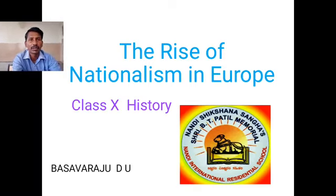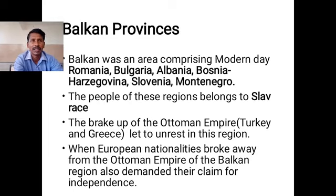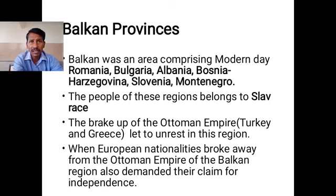In the previous session we were discussing about the tension which arose in the Balkan provinces. The Balkan province was mainly the area comprised of modern Romania, Bulgaria, Albania, Bosnia, Herzegovina, Slovenia, Montenegro, and the different people living in this particular region belong to the Slav race.